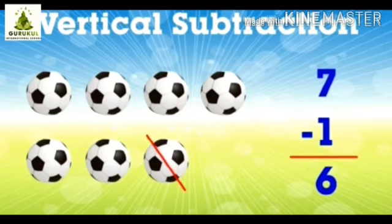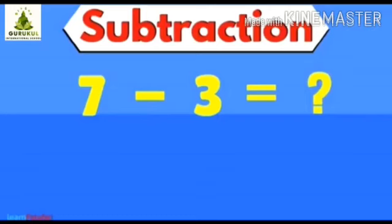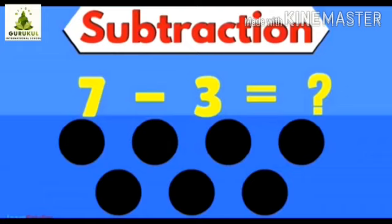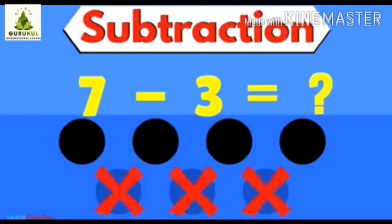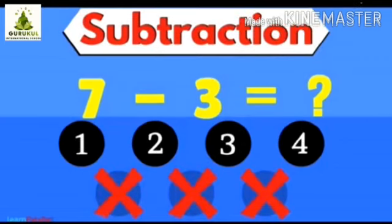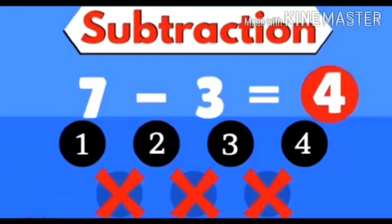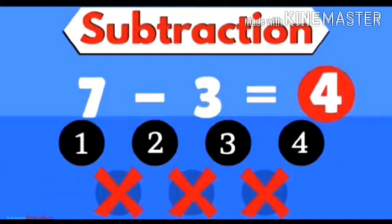We did that in vertical subtraction. Now let us see it in horizontal way. Here are seven dots — out of seven, three we have to take away. Let us count how many remain: 1, 2, 3, 4 — four dots are remaining. So the answer is four. Remember, we always take away a smaller number from a larger number, and the answer we get is called the difference.